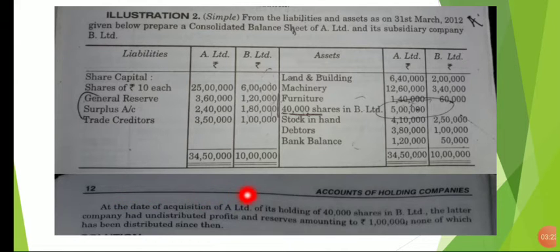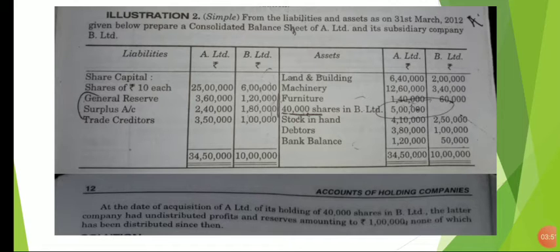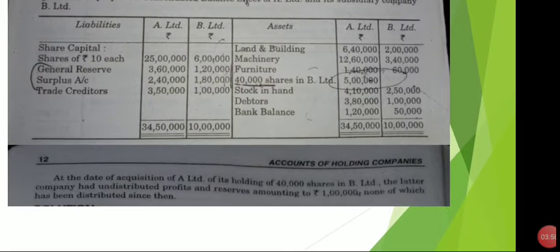At the date of acquisition, A Limited held 45 shares in B Limited, worth Rs. 5 each. The company's profit and reserves amounted to one lakh, none of which has been distributed since then. That is why we prepare a consolidated balance sheet — combining A and B's individual balance sheets into a summary consolidated balance sheet.